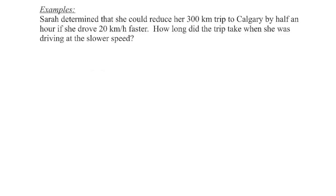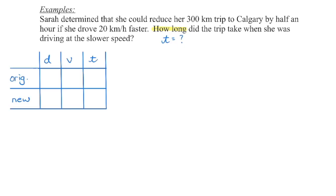When you read the question, you first want to identify what it is we're looking for. We can see here that we're trying to figure out how long did the trip take — how long is the time? So that tells us we're looking for time. Therefore, the variable T has to be in the equation we set up. Then we're going to go off to the side of our paper and set up a chart to help us organize the information.